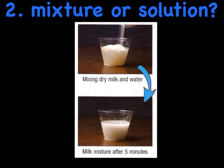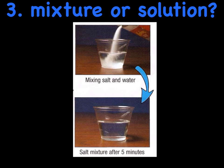Number two: we have mixing dry milk and water, and then this milk mixture after five minutes. Is it just a mixture or also a solution? Spelling counts. Number three: mixing salt and water, and this salt mixture after five minutes. Is it just a mixture or is it also a solution? Spelling counts. Put it in the tray when you're done. Bye.